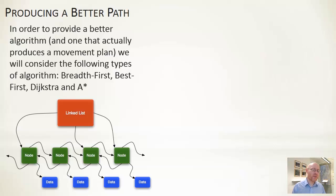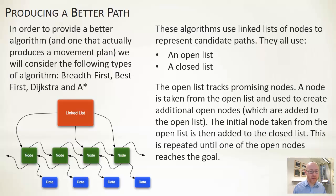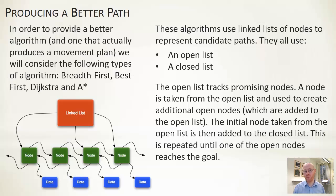All of these algorithms share two lists: an open list and a closed list. The open list contains all of the next possible steps — things we might be able to move to next. At any point, we pop one from the open list as our next step. The closed list tracks all locations we've already visited, so we don't loop back — we always consider new spaces.